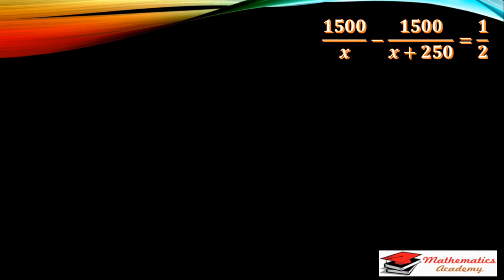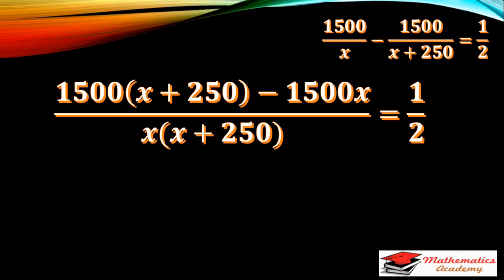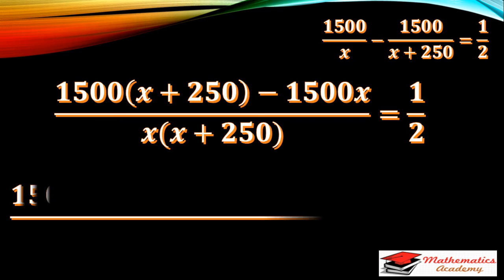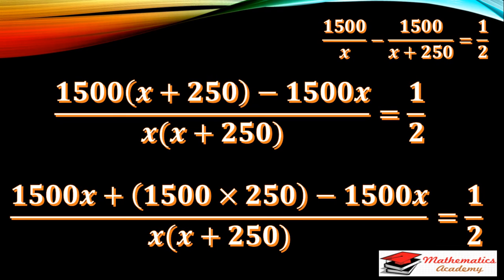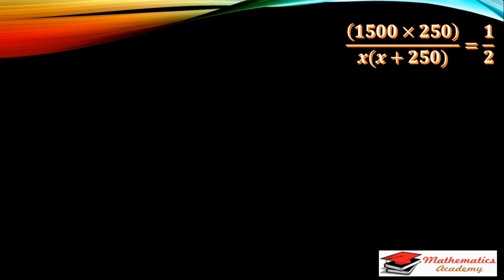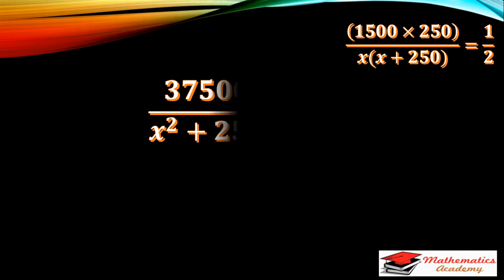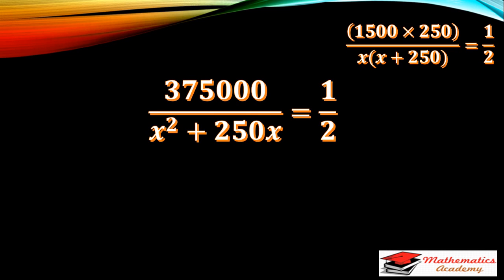On simplification, 30 upon 60 reduces to 1 upon 2 on the right-hand side. Taking the LCM, the denominator becomes X times X plus 250. Expanding the numerator: 1500 multiplied by X plus 250 gives 1500X plus 1500 times 250. The 1500X terms cancel since one is positive and one is negative, leaving 1500 times 250 which equals 375000.